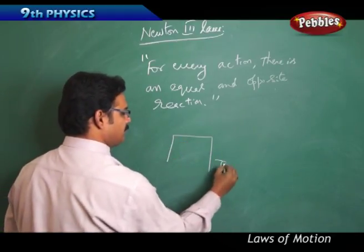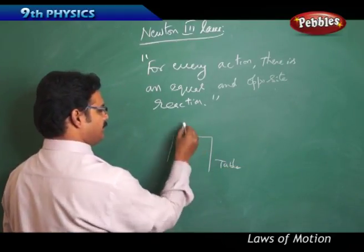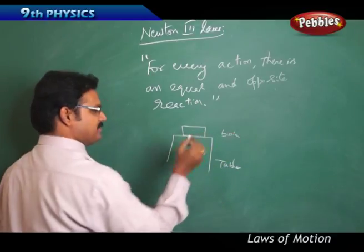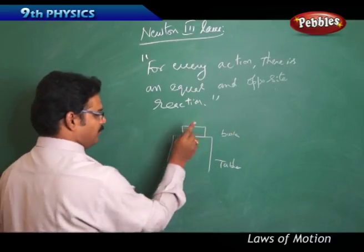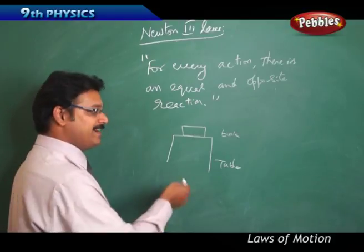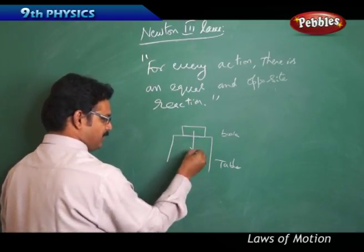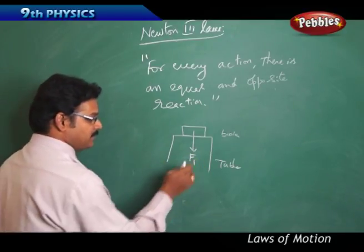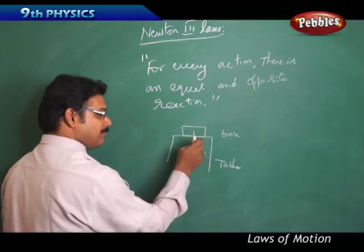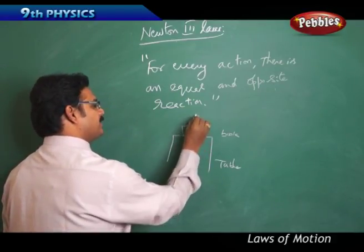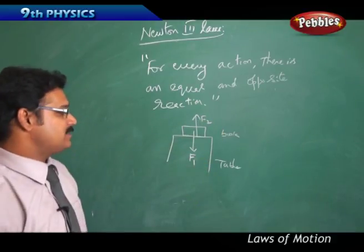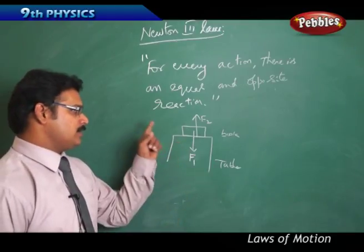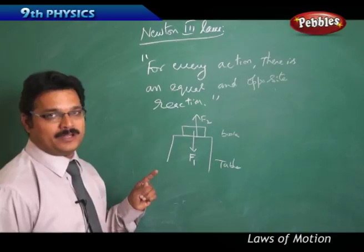Suppose there is a table and on the table a book is placed. Because of the weight of the book, this weight is applied on the book in the downward direction — let us say the weight is F1. At the same time, the table will also apply a force on the book in the upward direction, which is F2. Because F1 and F2 are equal and opposite, the book maintains the same state on the table.